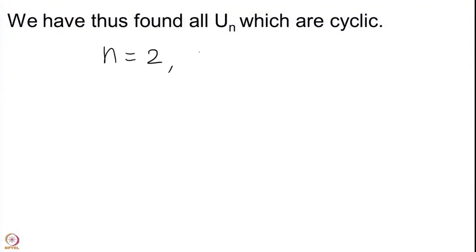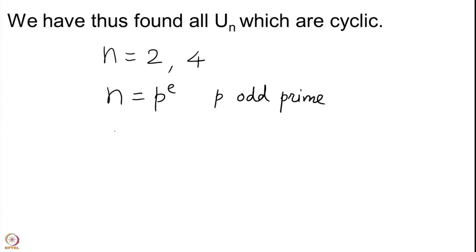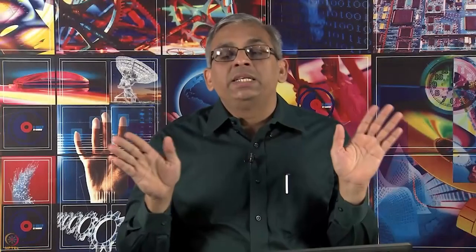We have now identified all U(n) which are cyclic groups. To recall: these are n=2, n=4, n = power of an odd prime p^e, or n = 2·p^e where p is an odd prime. These are all the cases where U(n) is cyclic, and in all the remaining cases we have seen that U(n) cannot be cyclic. As far as determining when U(n) is cyclic, we have solved the problem.